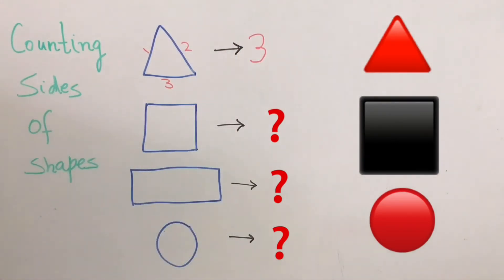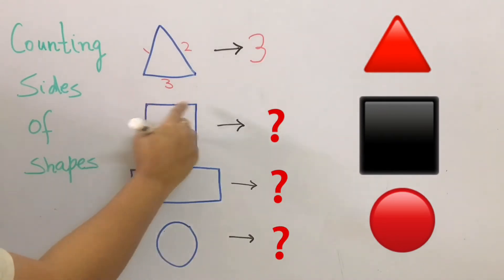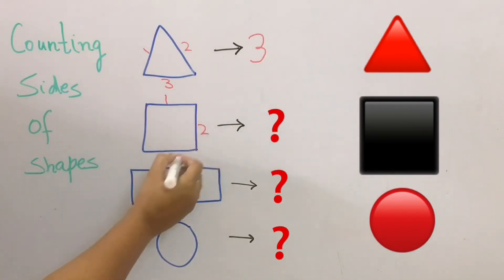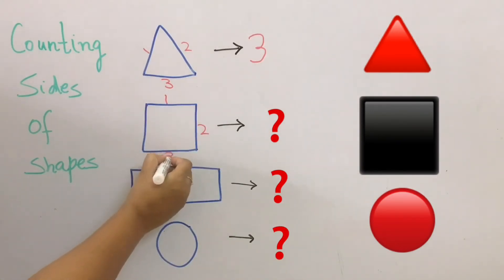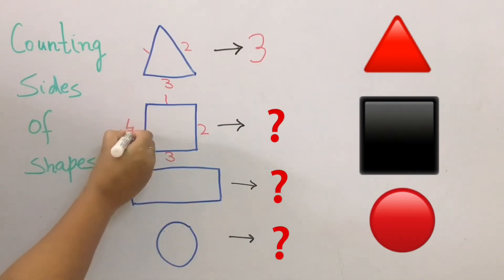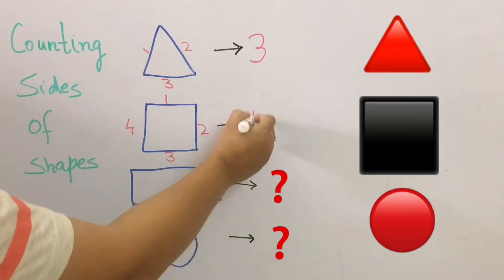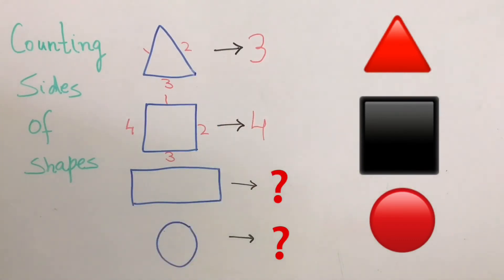The next shape we have is a square. Let's count the square's sides — one, two, three, and four. So that means a square has four sides.